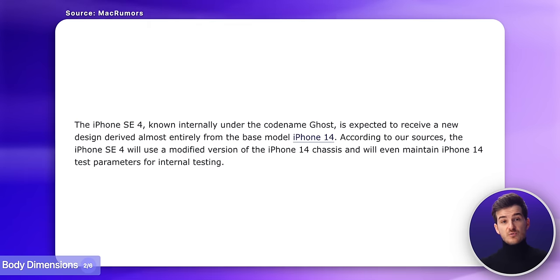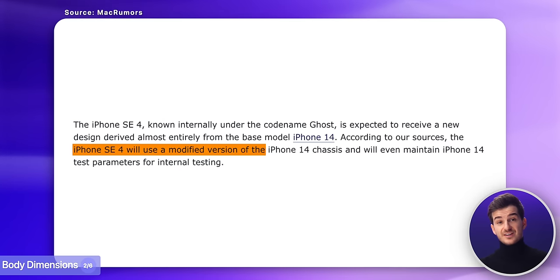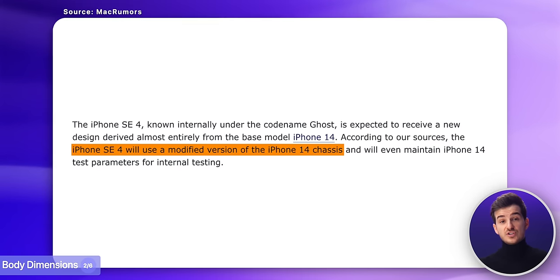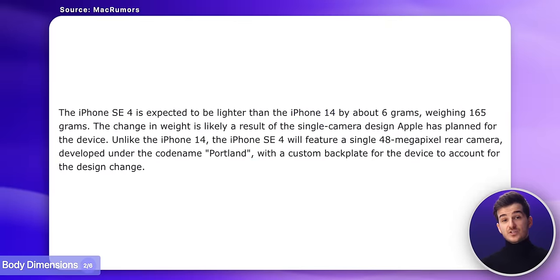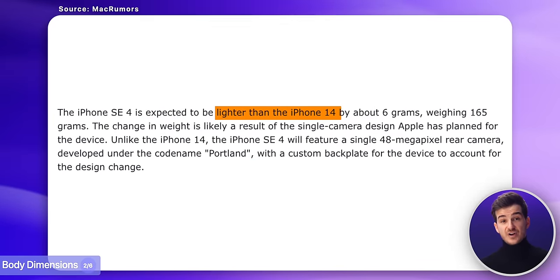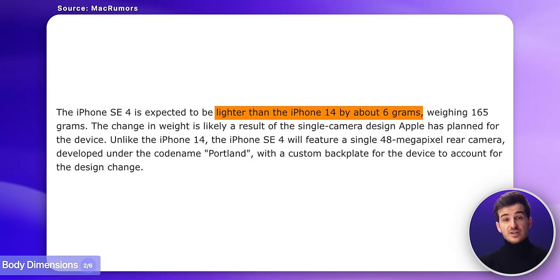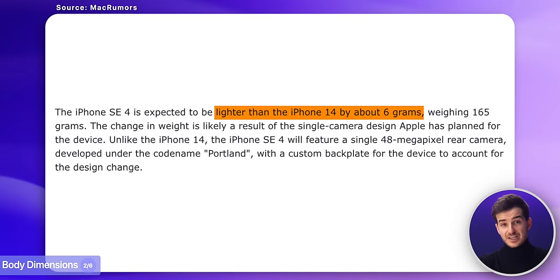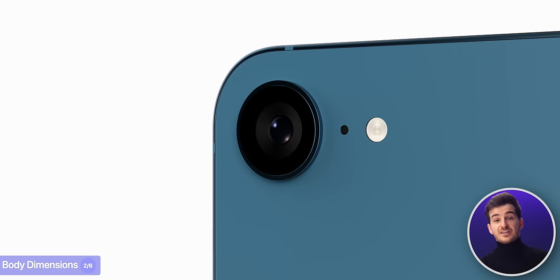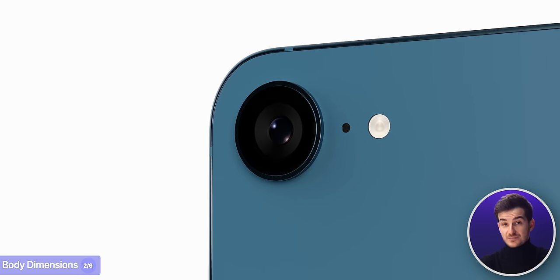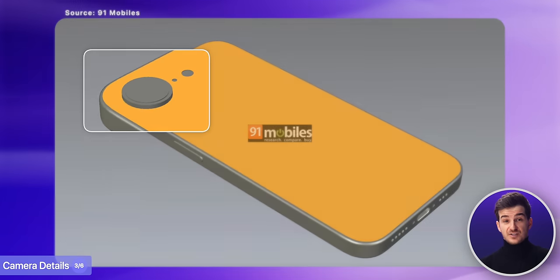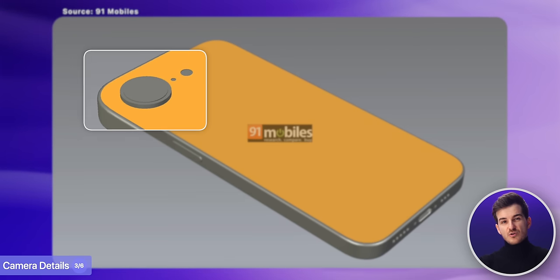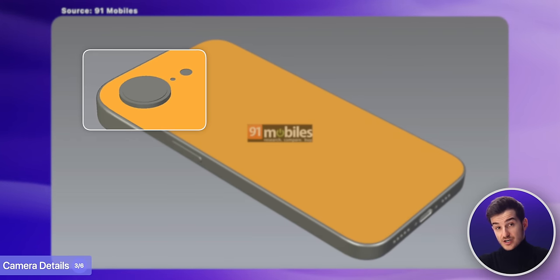Once again reiterating what MacRumors stated, that it would use a modified iPhone 14 chassis — one that would also be lighter by 6 grams compared to an iPhone 14. And the reason for that being the camera. If we take a look at the back of the CAD leaks, we can see a single camera module, one that is also quite large.